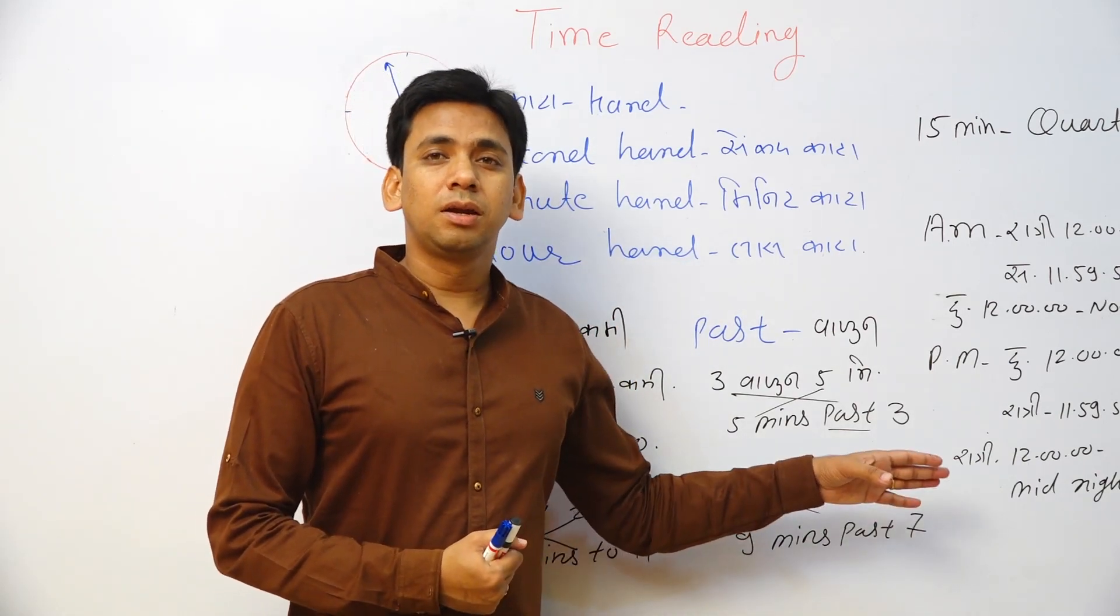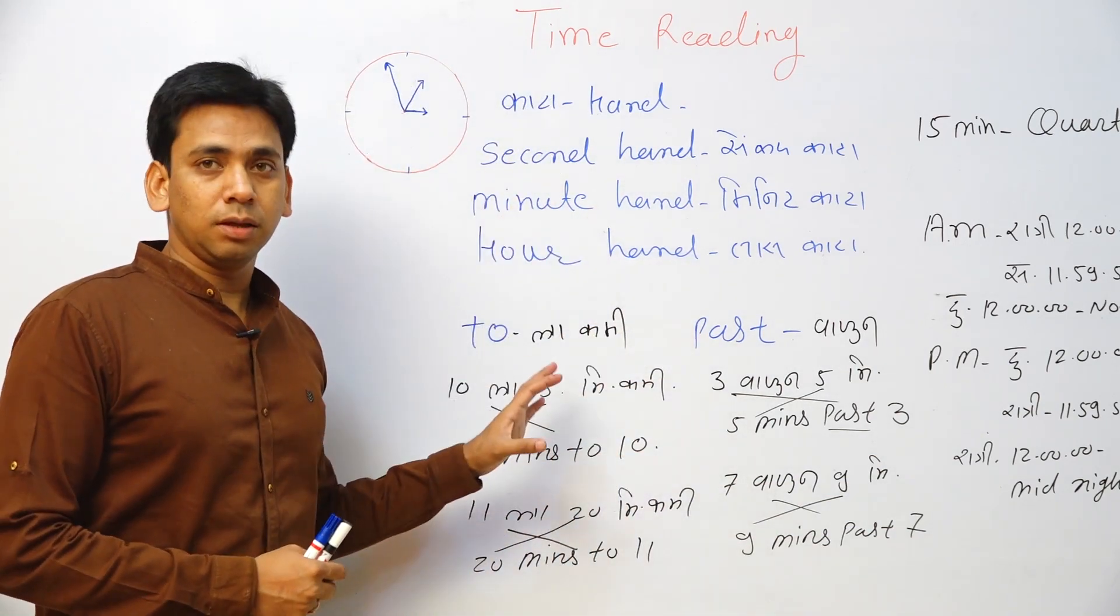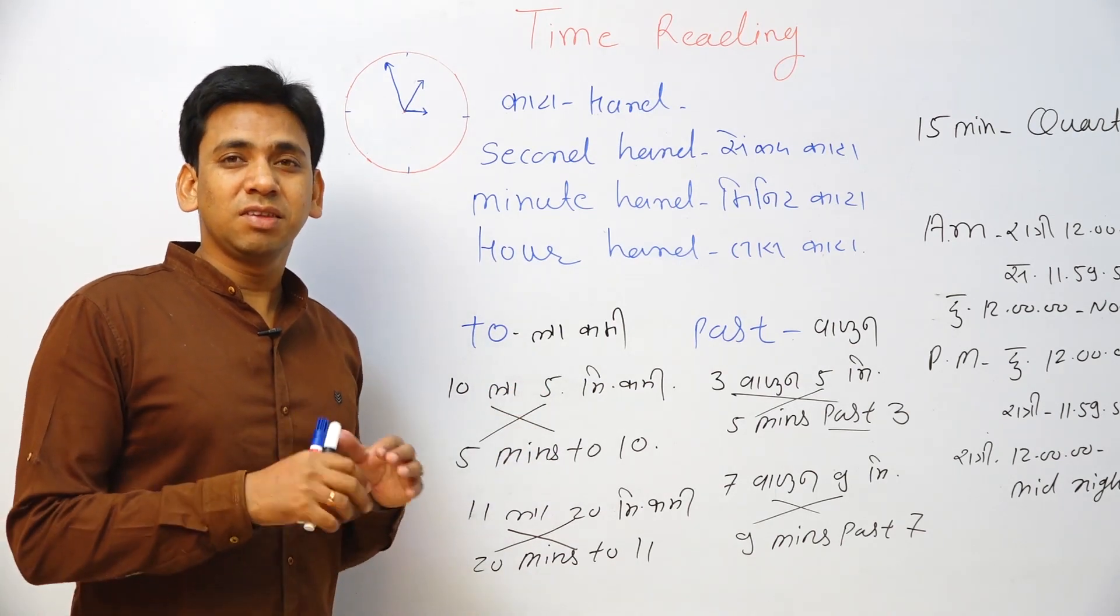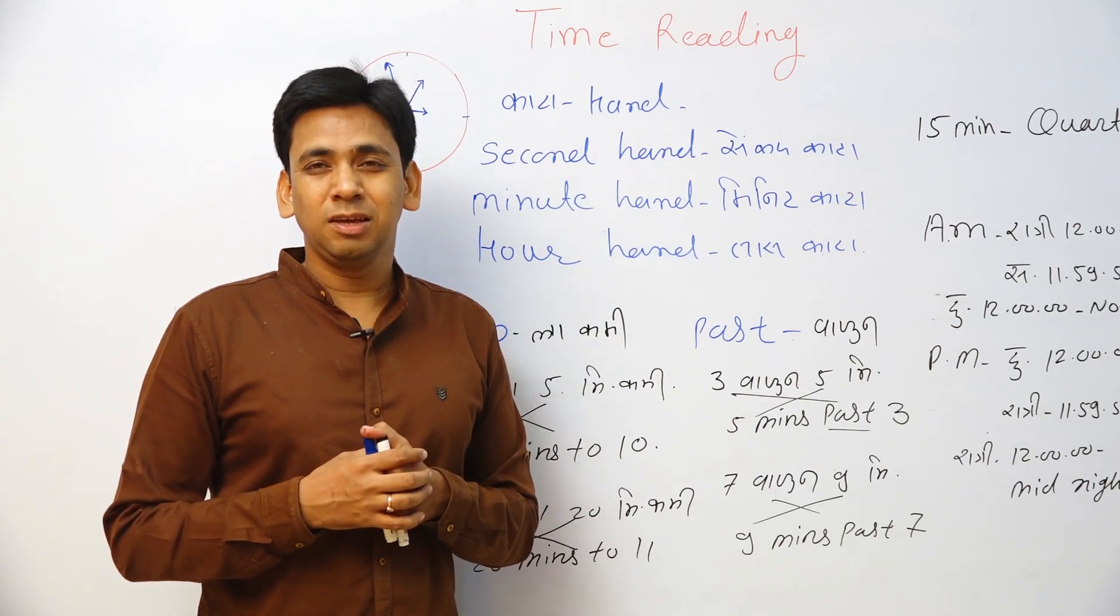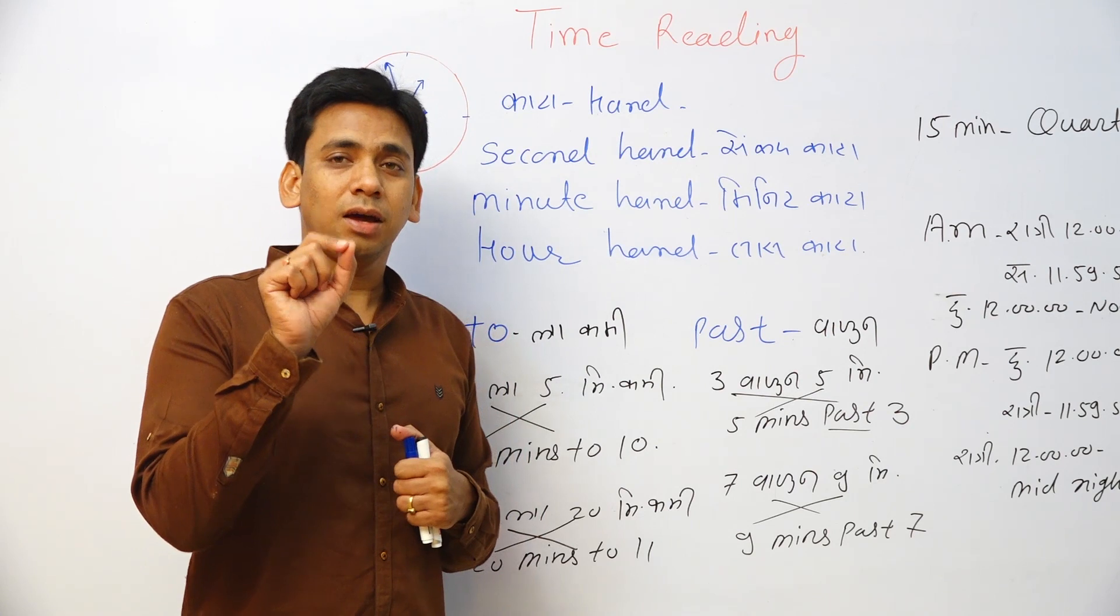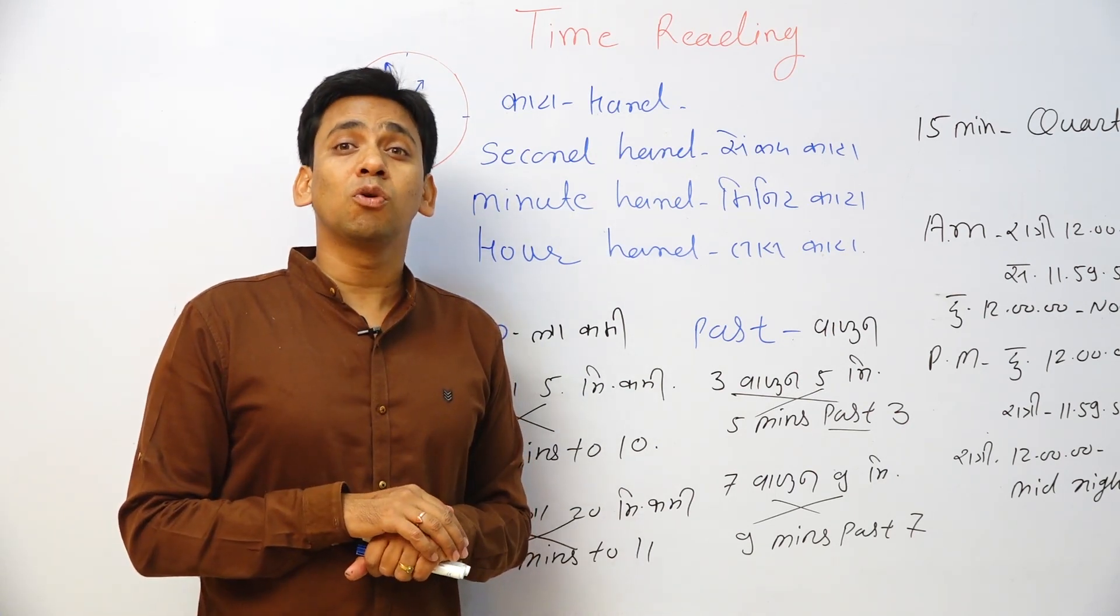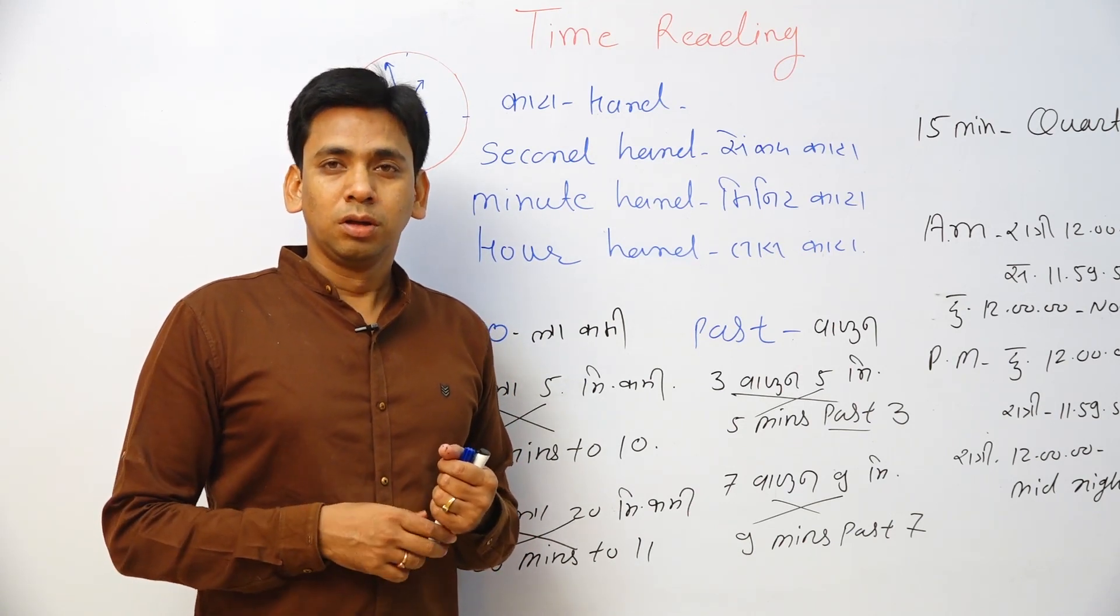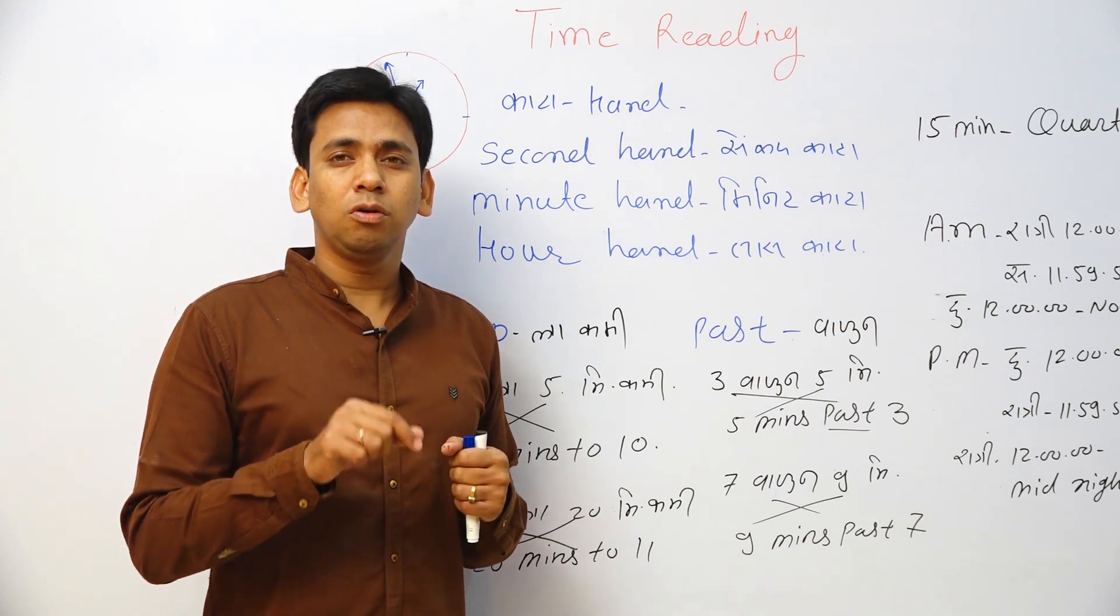Hope so, you have understood this properly. Use this time while speaking. Never say 10:20, 3:40, 5:10. Again one concept is remaining: that is called 5 o'clock, 6 o'clock, 7 o'clock, 8 o'clock. Full 9 o'clock, 12 o'clock. This is called o'clock.